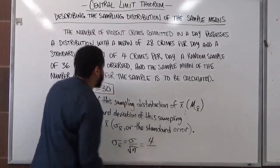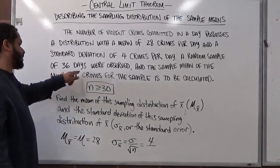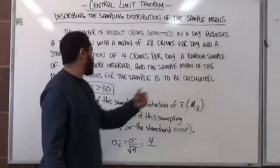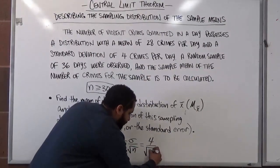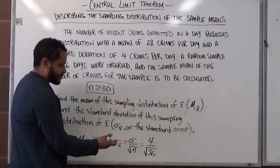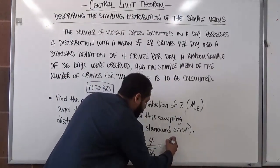And we're going to divide that by the square root of 36, because these are the number of random samples. You see a random sample of 36 days. So we're going to put the square root of 36 right here on the bottom. We're going to simplify this. Take the first step, take the square root.